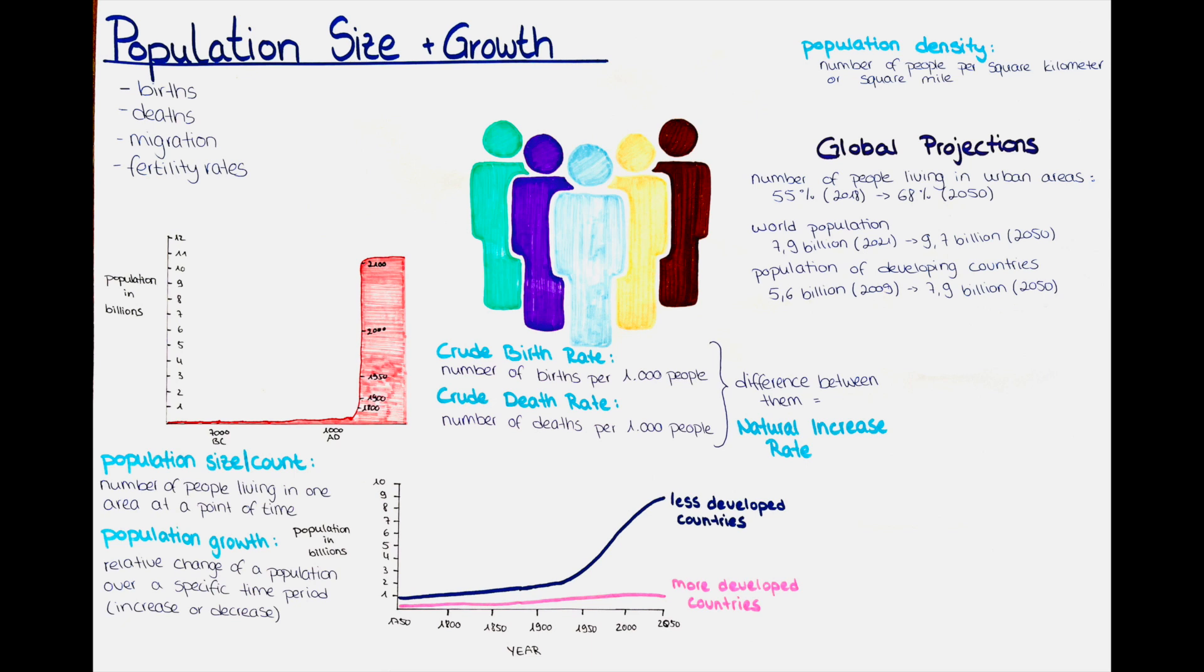How does population size and growth affect public health? The impact of population size and growth on public health is significant, as it affects access to healthcare, disease transmission and the availability of resources. An increase in population size can lead to a strain on healthcare services, resulting in reduced access to healthcare for some individuals. Additionally, population growth can increase the spread of infectious diseases, especially in overcrowded areas with inadequate sanitation and hygiene.